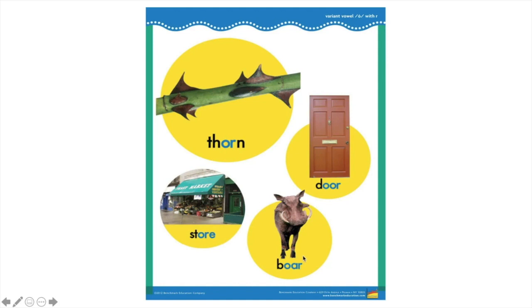We are going to try to blend this word together. I have the letter S, and S makes the S sound. I also have the letters O, A, R. Together these letters make the OR sound. Listen as I blend the word SOAR. S, OR, SOAR. Please blend the word with me. SOAR.